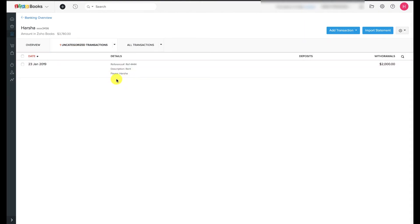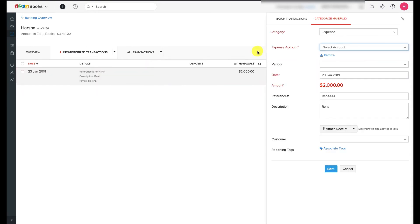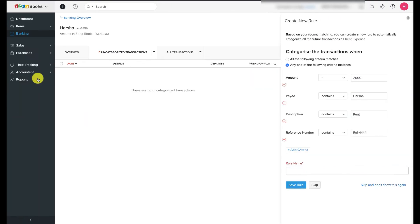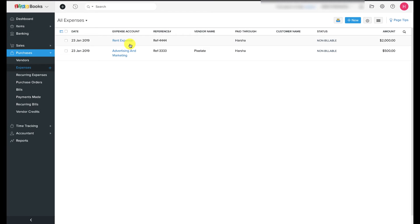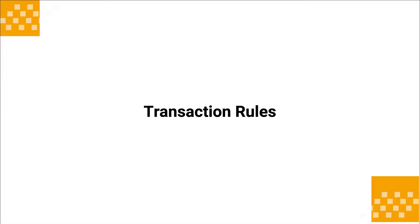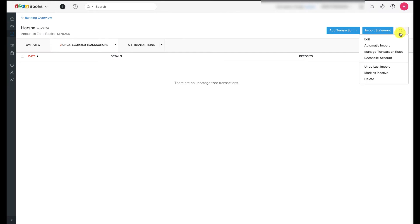Similarly, if you've paid for any expenses from your bank — like a rental expense of $2,000 — you can categorize it and it will be reflected in the expenses module. Additionally, Zoho Books allows you to create rules to automatically categorize similar transactions. For example, since I know I'll be paying my rent of $2,000 every month, I can tell Zoho Books to automatically categorize payments from the same account with the same amount next time. You can access transaction rules settings by clicking the gear icon.